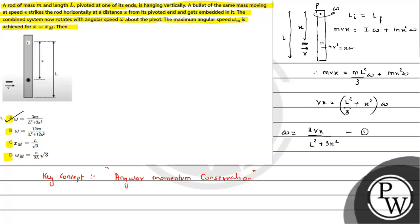Now we will use the concept of maxima and minima. So for omega to be maximum, we can write d(omega)/dx - X is the variable - that has to be equal to 0. So we can write it over here as omega equals 3VX upon L square plus 3X square. Let's check it.